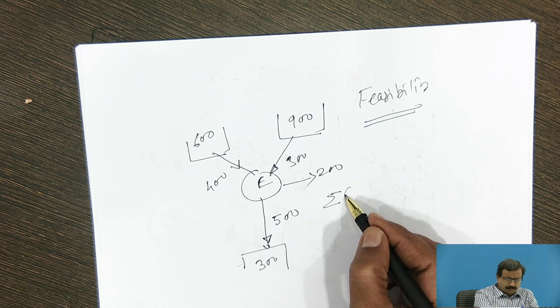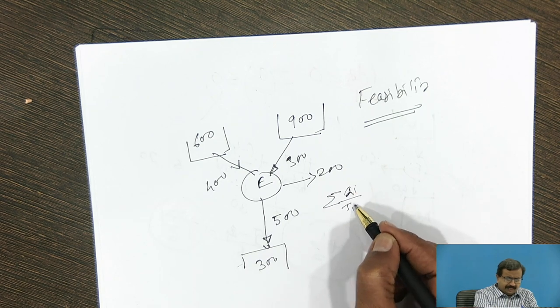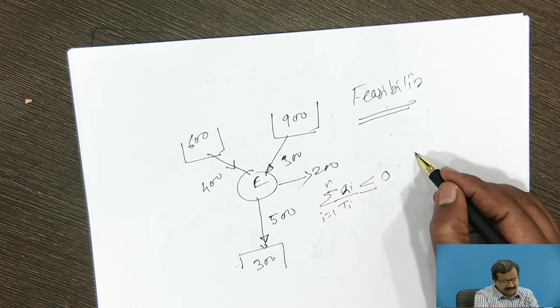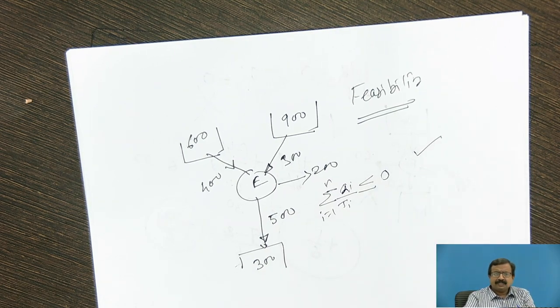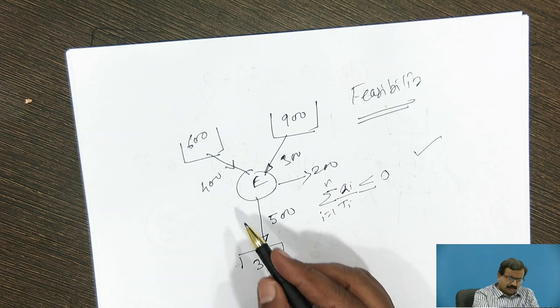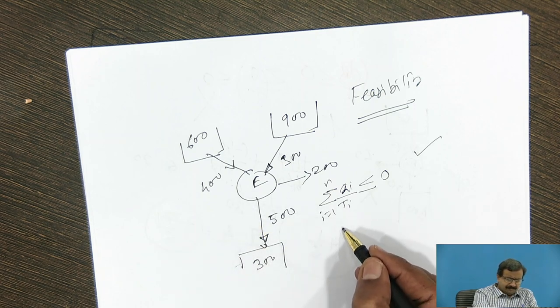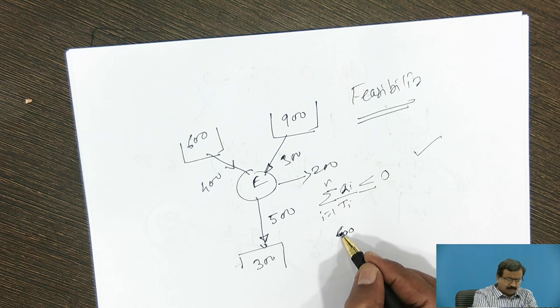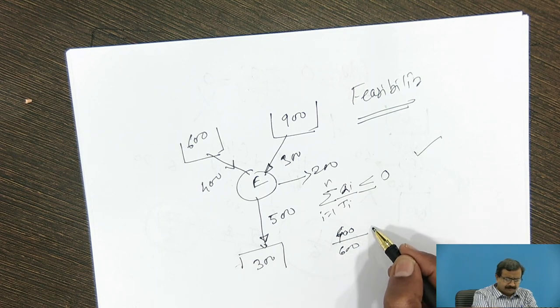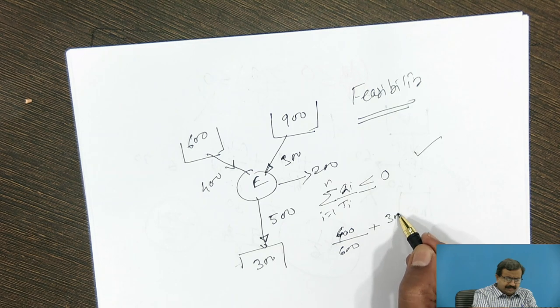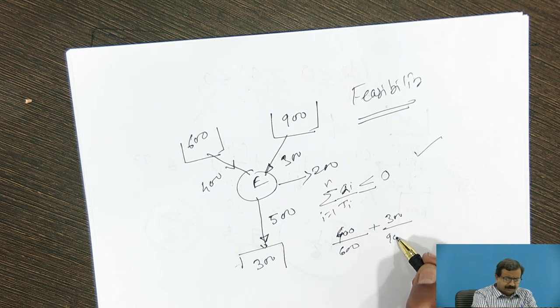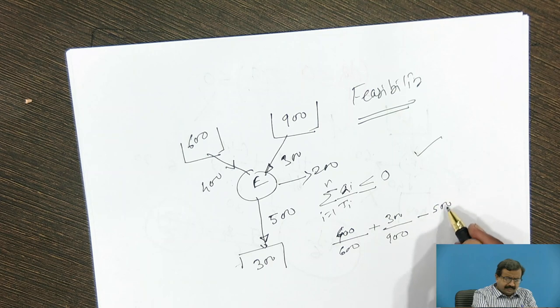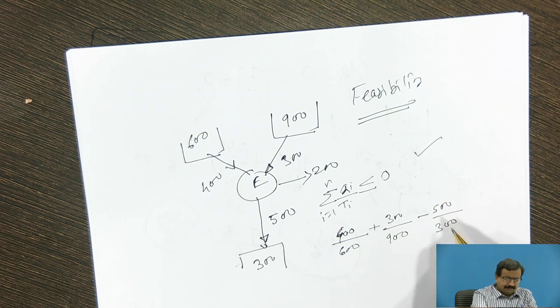So Clausius inequality is a very handy tool that we can have. Now we will see summation of Qi upon Ti, i equal to 1 to N. If it is less than or equal to 0, it is valid engine. Otherwise, not. So I will see now. As a system, 400 is the amount of heat supplied at temperature 600. Then 300 is the amount of heat supplied at a temperature of 900. And 500 is the amount of heat rejected at a temperature of 300.